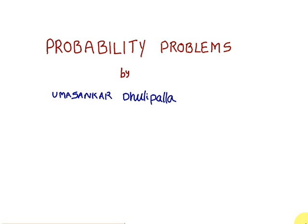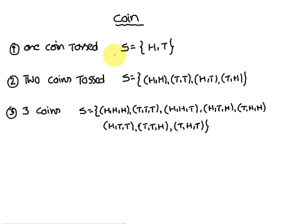Today we are going to discuss some basic probability problems regarding coins. A coin has a head and a tail. If you toss one coin, the sample space consists of either head or tail.